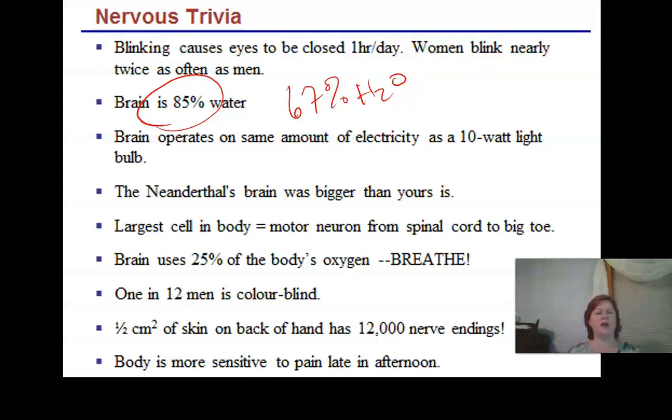Your brain operates about the same amount of electricity as a 10-watt light bulb, although I'm pretty sure I've met some people that are a little lower wattage than that. The Neanderthal's brain was actually bigger than yours. The largest cell in your body is a motor neuron. It goes all the way from the base of your spine all the way down to your big toe, so you have some cells that might be three feet long. The brain is going to use about 25% of your oxygen, so make sure that you breathe.